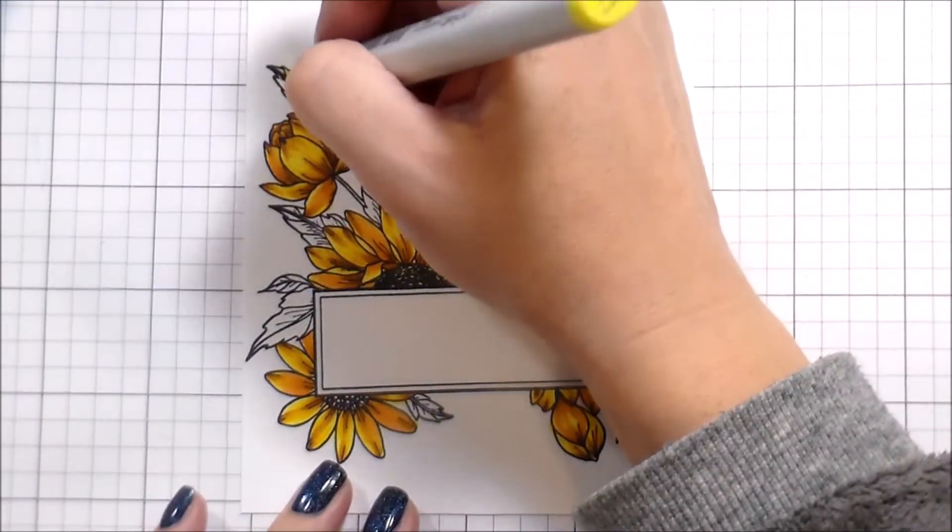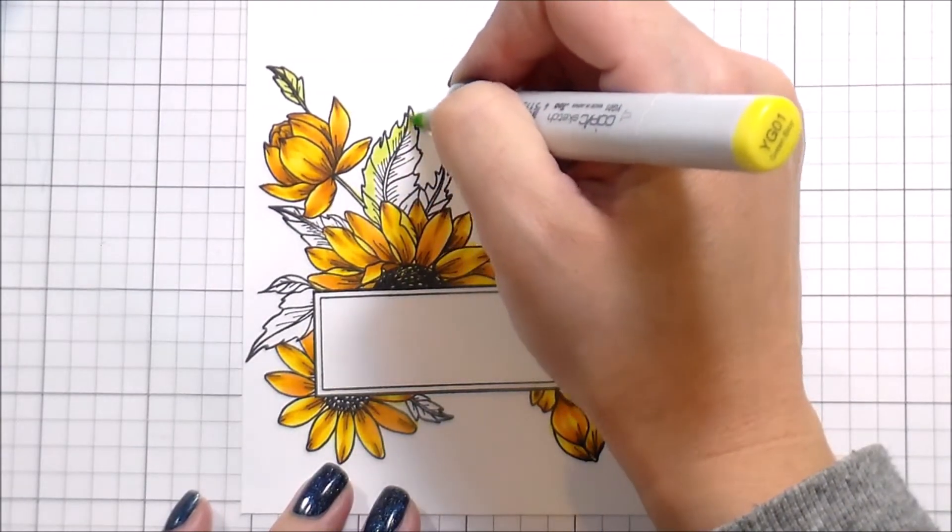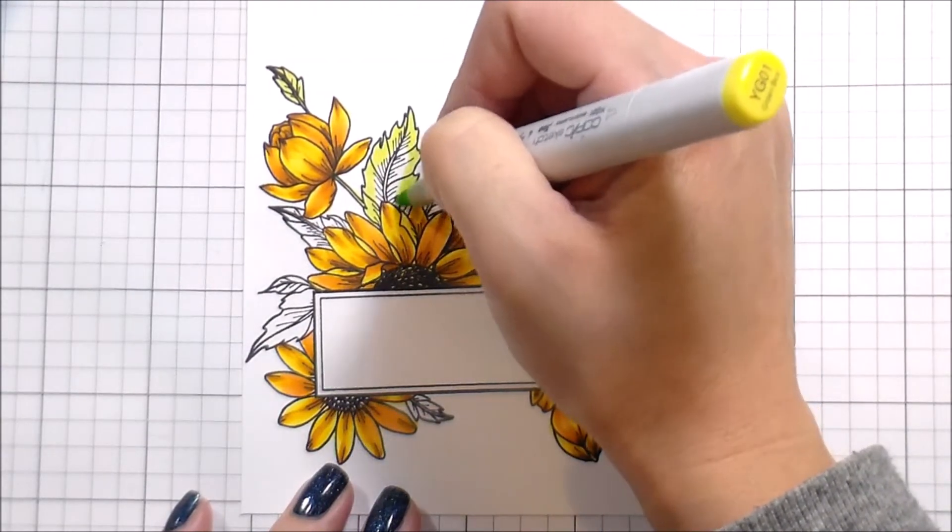Moving on to the leaves, I will be adding the majority of the shading to the center of the leaves and leaving my highlight on the edge. Back to the house.